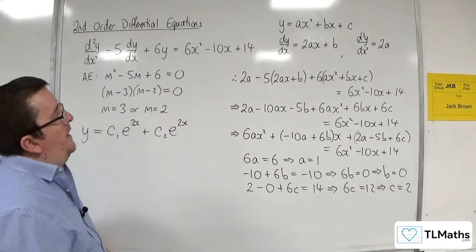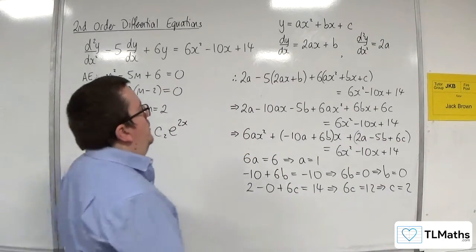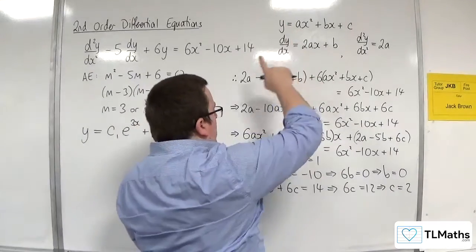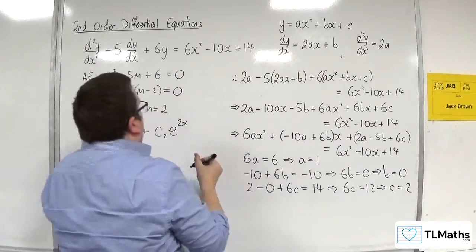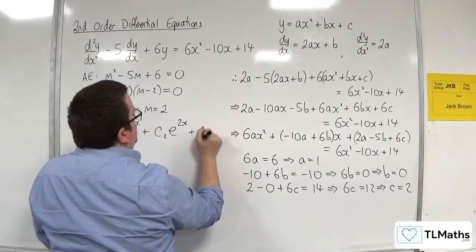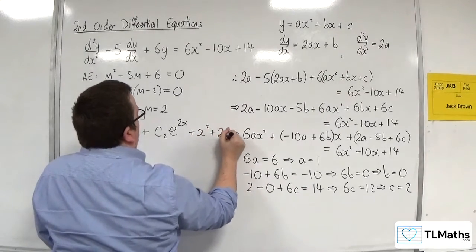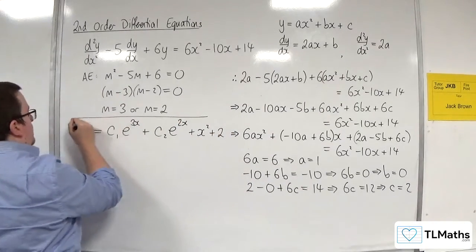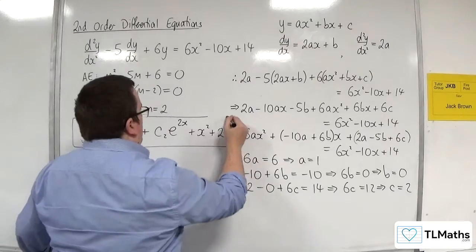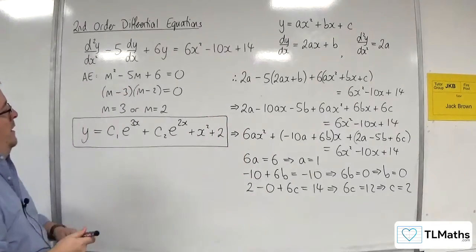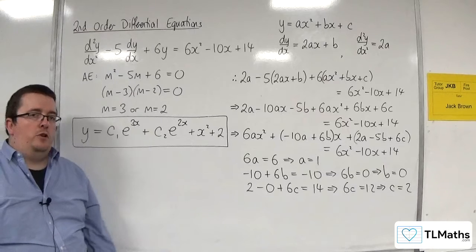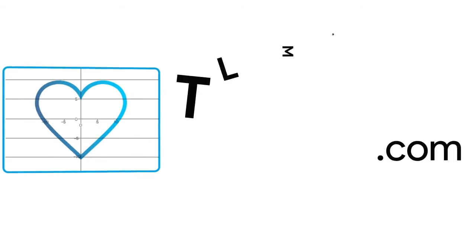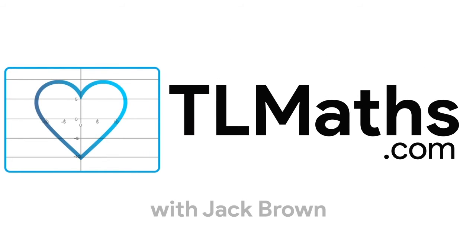So the trial function will be of the form y equals x squared plus 2. And so that forms our particular integral, and we add it on to our general solution. And this is the general solution to my differential equation.